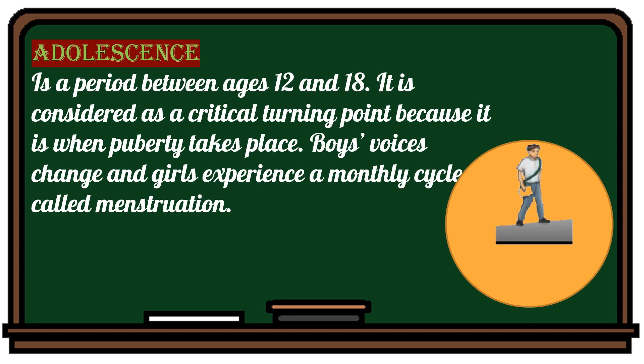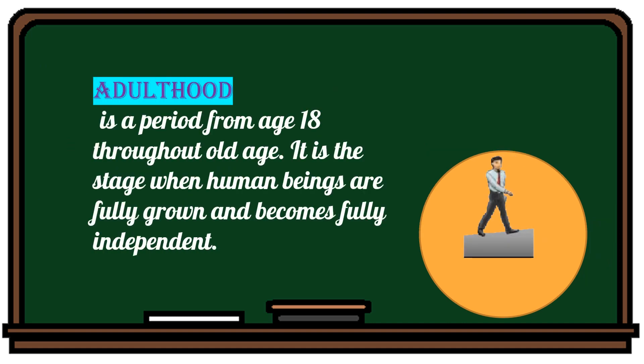Adolescence is a period between ages 12 and 18. It is considered a critical turning point because it is when puberty takes place. Boys' voices change and girls experience a monthly cycle called menstruation. Adulthood is a period from age 18 throughout old age. It is the stage when human beings are fully grown and become fully independent.